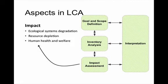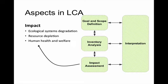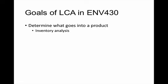The second phase we're going to focus on is impact assessment. This includes a couple of different aspects of how it impacts the environment, broken down into three stages. Ecological systems degradation involves how things actually degrade the ecosystem — water quality, air quality, that kind of thing. Resource depletion is what's involved with the manufacture or use of the product that depletes natural resources. And then human health and welfare — whether an aspect of the product or its production is bad for human health.